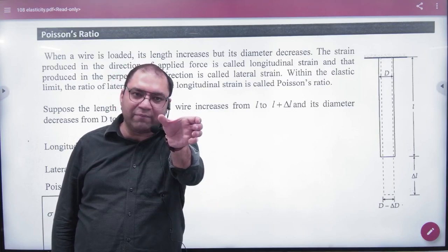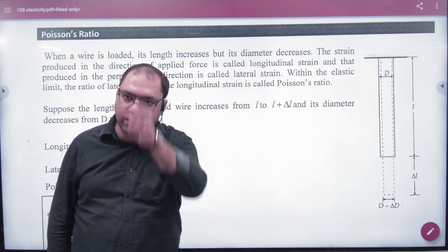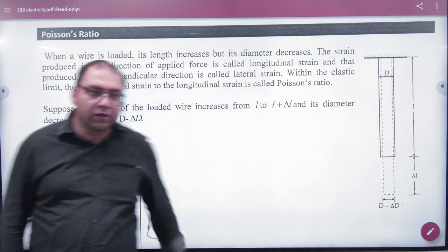We take the diameter, and the diameter is reduced when the length increases. When the length of the wire increases, the area will decrease. So what is the Poisson's ratio?